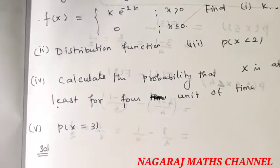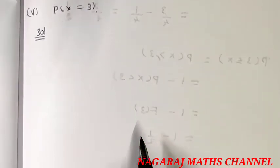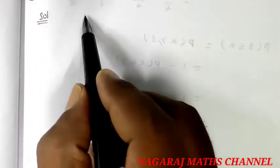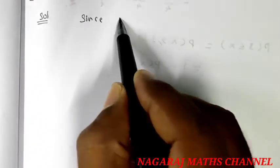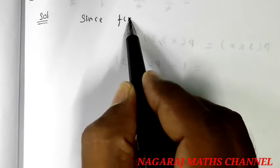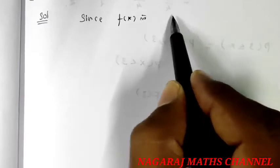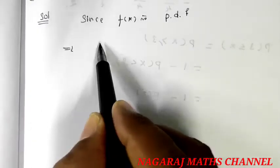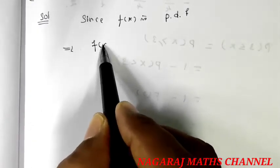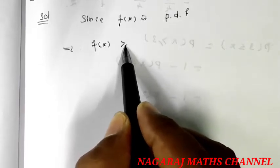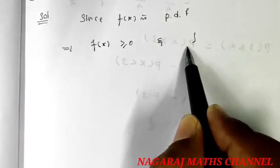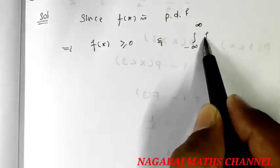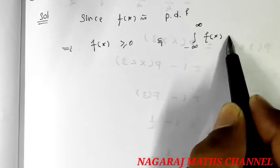First, we will see the probability density function. Since f of x is a probability density function, we need f of x to be greater than or equal to 0, and the integral over minus infinity to plus infinity of f of x dx must equal 1.